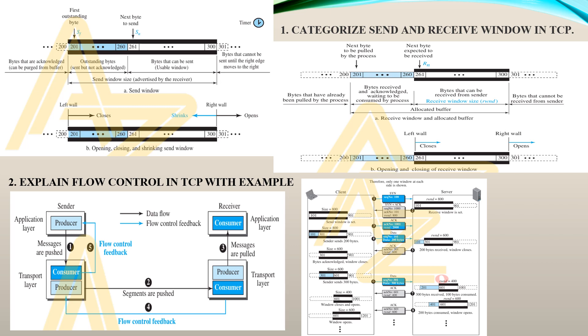Moving on to the next question: explain flow control in TCP with an example. This is the diagram for flow control, where you can see a sender and a receiver with numberings 1, 2, 3, 4.